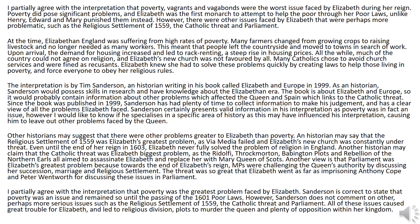At the time, Elizabethan England was suffering from high rates of poverty. Many farmers changed from growing crops to raising livestock and no longer needed as many workers. This meant that people left the countryside and moved to towns in search of work. Upon arrival, the demand for housing increased and led to rack renting — a steep rise in housing prices. All the while, much of the country could not agree on religion, and Elizabeth's new church was not favored by all. Many Catholics chose to avoid church services and were fined as recusants. Elizabeth knew she had to solve these problems quickly by creating laws to help those living in poverty and force everyone to obey her religious rules.